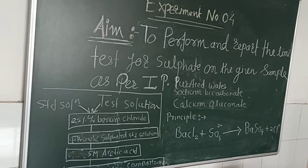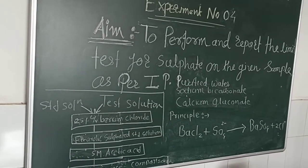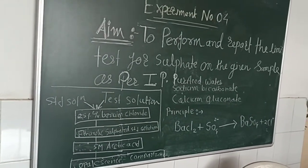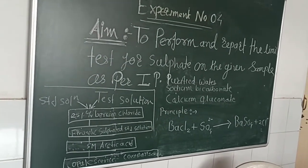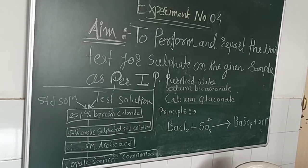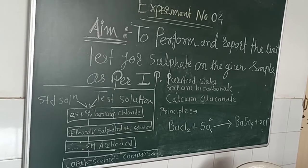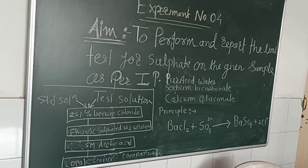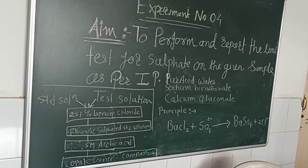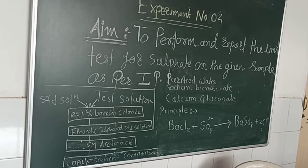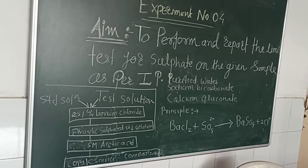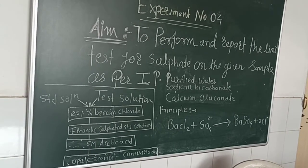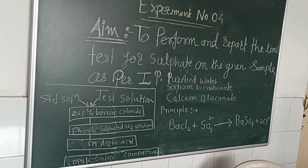In the previous experiment, experiment number 3, you studied what a limit test is and what is the principle behind determining the limit test for chloride. Now we look at the limit test for sulfate.